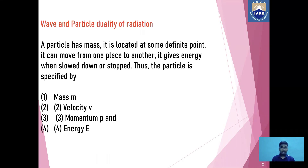Before going into the topic of De Broglie wavelength associated with an electron, it is very important for us to know what is wave and particle duality of radiation. A particle has mass, it is located at some definite point, it can move from one place to another, and it gives energy when slowed down or stopped. Thus a particle is specified by its mass, velocity, momentum and energy.